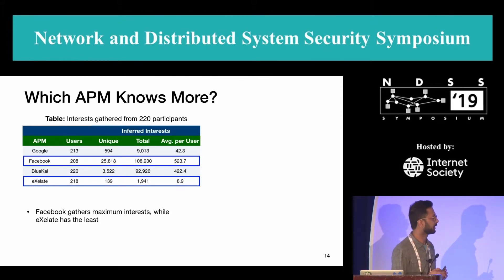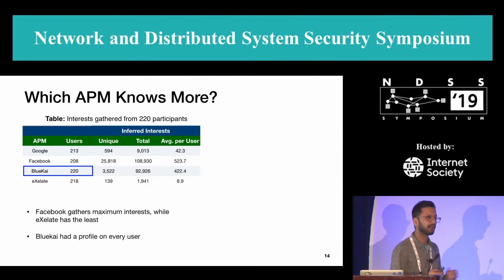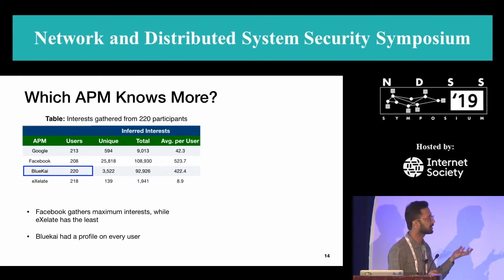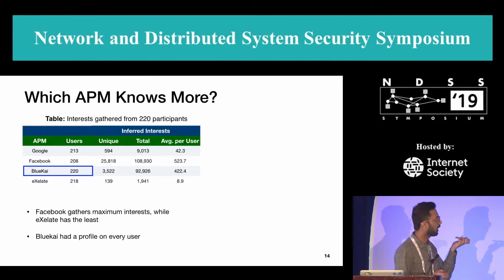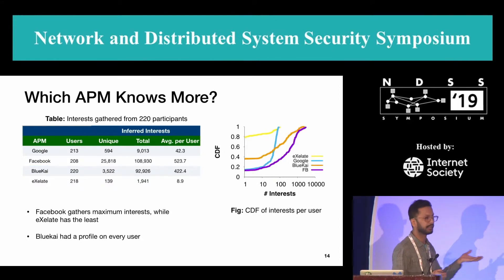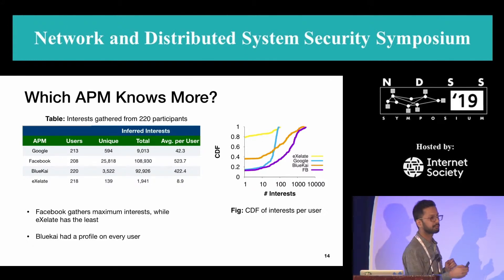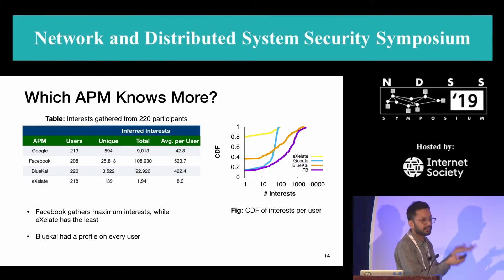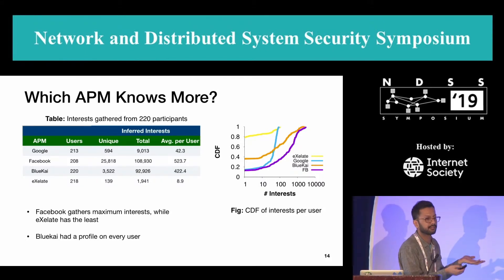BlueKai had a profile on every single user in our study. This table shows aggregates, but we also wanted to study how this looks per participant. For that I plot the CDF with number of interests per participant on the x-axis. You can still see that Facebook is the winner and Exelate knows the least. One interesting thing to note is that Google has a gap of categories about the user, so you can see it quickly converges.